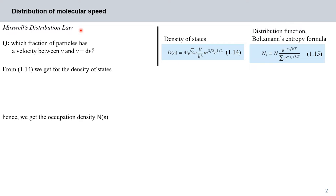One of the most serious simplifications in our gas model was to assume that all particles had the same velocity v. Due to Boltzmann's entropy formula in equation 1.15, we find that particles building up a system must obey an energy distribution that directly results in a distribution of velocities. On the following slides we will use Boltzmann statistics to calculate the energy distribution in an ideal gas and derive the velocity distribution from this.